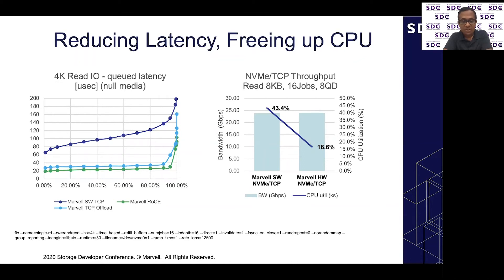The green line at the very bottom shows NVMe over RoCE v2 providing absolute lowest latency in these environments — confirming that if you require absolute lowest latency and have the skill set to deliver a lossless network, NVMe over RoCE is a great choice. The blue line above it shows the offloaded NVMe over TCP solution — the performance is pretty close to that of NVMe over RDMA fabric, giving you the best of both worlds: good latency without the complexities of managing congestion, delivering a lossless network, or creating islands within your data center.